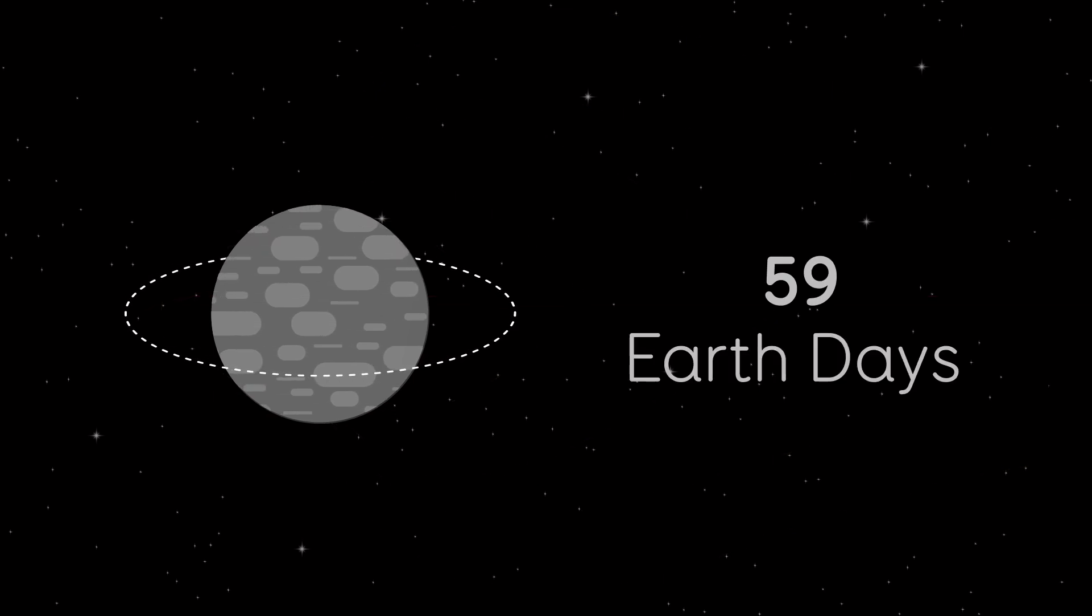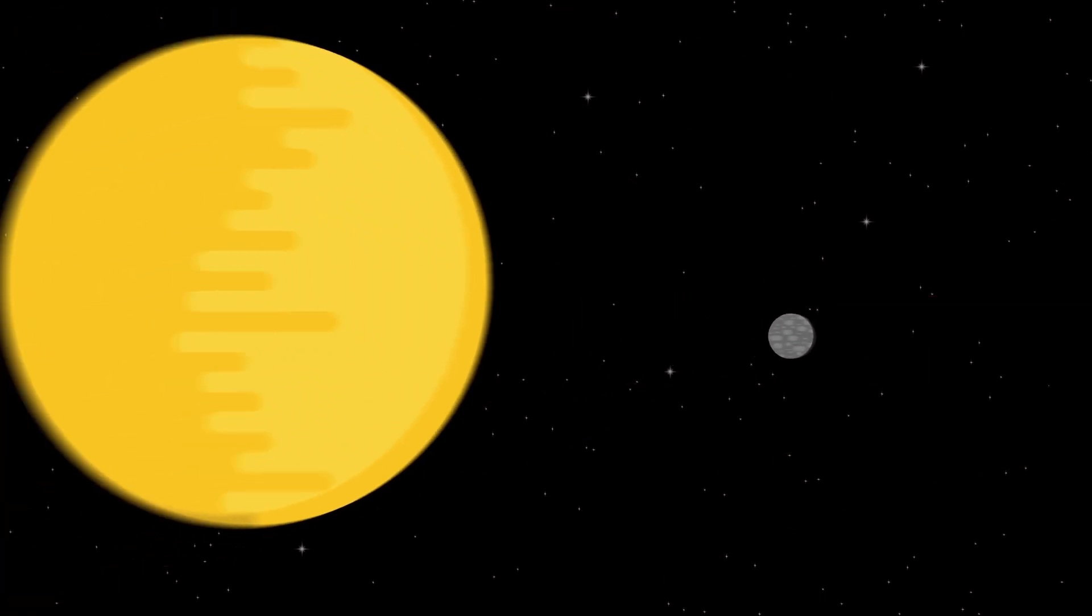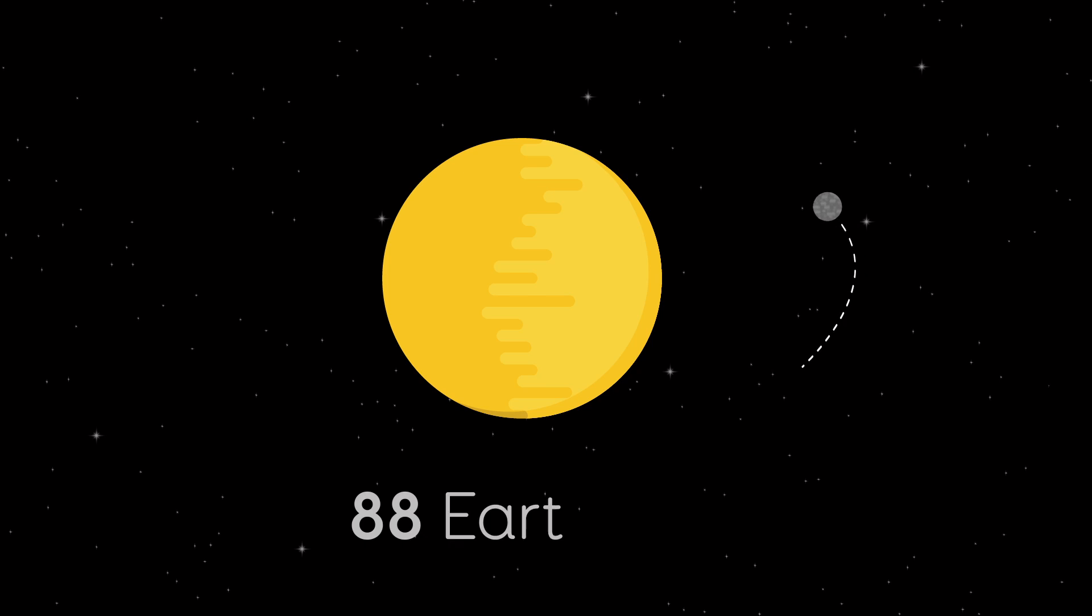Mercury takes 59 Earth days to rotate, but only 88 Earth days to whizz around the Sun.